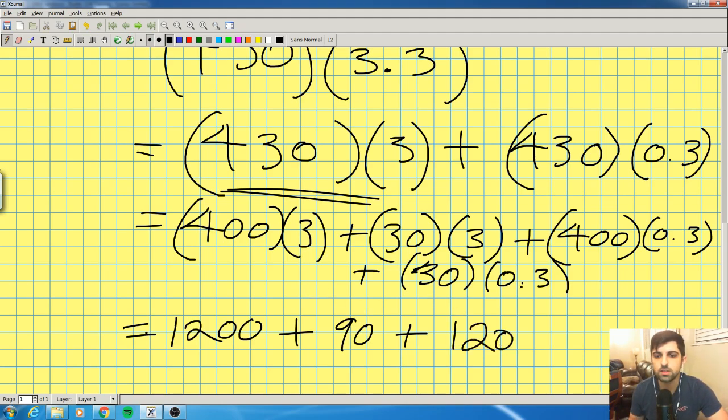Do the same trick over here. 30 times 0.1 is 3. Multiply by 3 and you get 30 by 0.3. And that is 9. Bingo. And now I just add them all together.